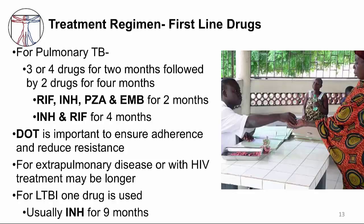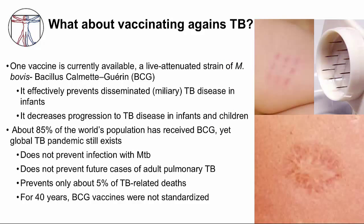Directly observed therapy, or DOT, is important for ensuring adherence to the entire regimen and to reduce emergence of resistance. It essentially means that a healthcare worker administers and watches the person take the antibiotics. Treatment of extra-pulmonary TB and TB in HIV-infected people is generally longer. LTBI treatment usually consists of isoniazid alone for nine months. Treating TB is complicated.